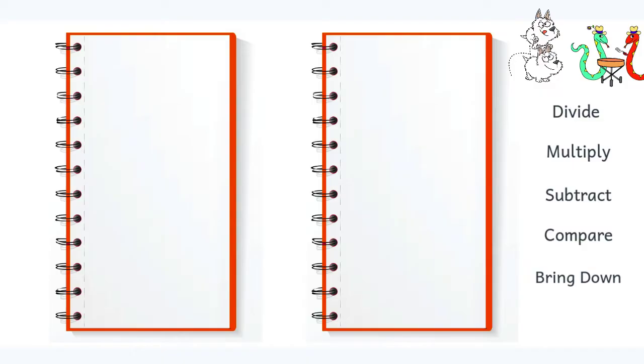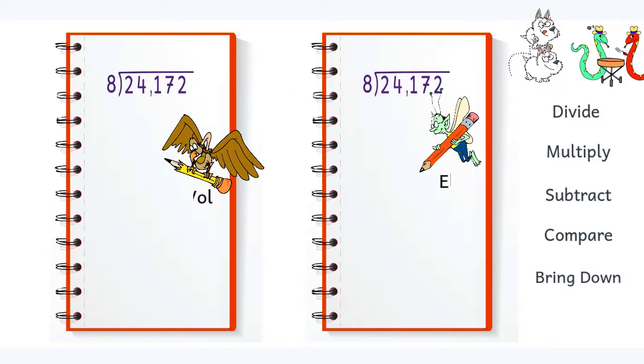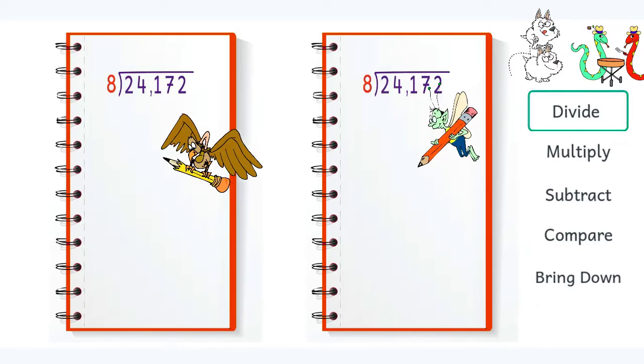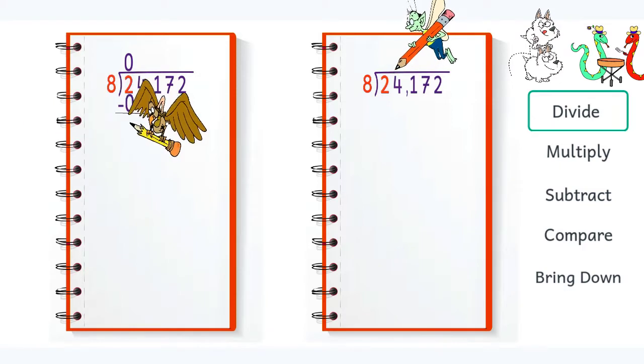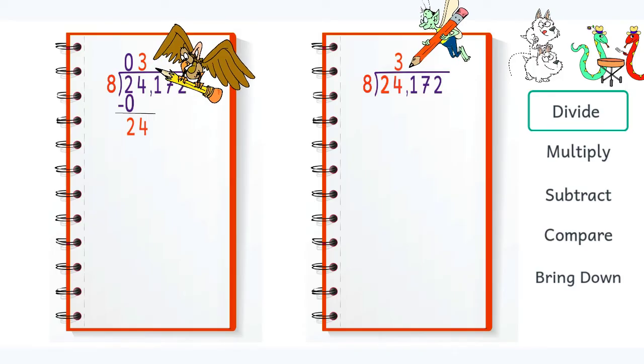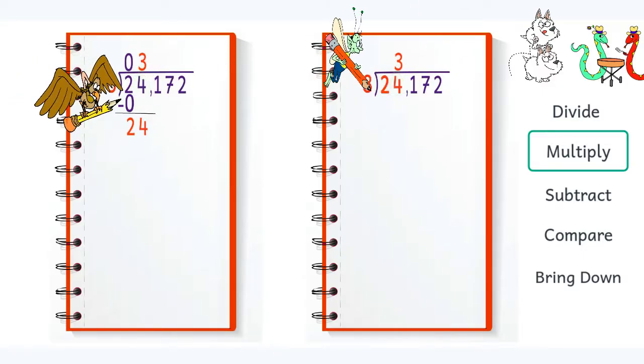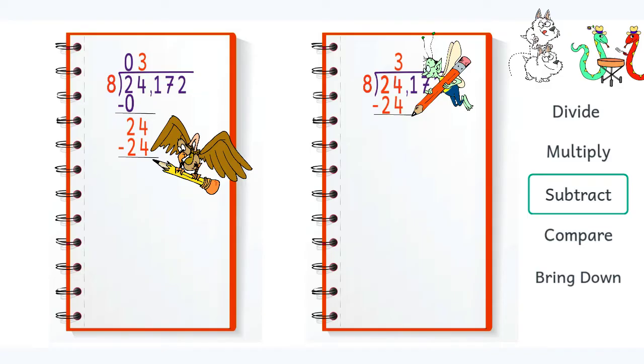Let's try another problem. Twenty-four thousand one hundred seventy-two divided by eight. Owl and Al are going to do this problem two slightly different ways. You should use the method that makes the most sense to you. The first thing we notice is that eight does not go into two, so the first step would be to divide eight into twenty-four. Three times eight is twenty-four, and twenty-four minus twenty-four is zero.